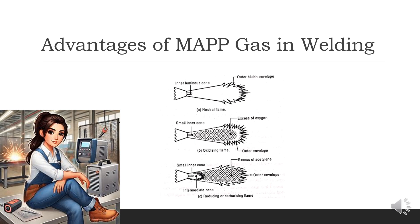Acetylene is the most popular fuel gas used in oxyfuel welding because of its high flame temperature and versatility. When combined with oxygen, acetylene produces a flame that can reach temperatures of approximately 5,700 degrees Fahrenheit (3,148 degrees Celsius), hot enough to melt most ferrous and non-ferrous metals. Advantages of acetylene include high flame temperature providing deep penetration and fast welding speeds, versatile flame adjustment that can be set to neutral, oxidizing, or carburizing flames for different welding needs, and precise control allowing for delicate and detailed work.